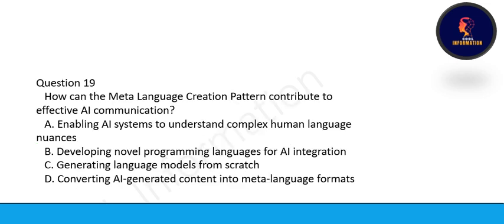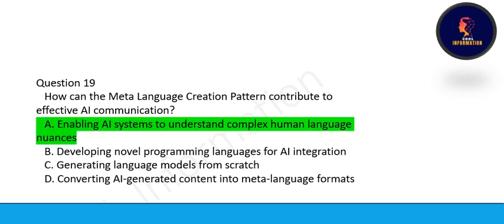Next one. How can the meta language creation pattern contribute to effective AI communication? Option A is enabling AI system to understand complex human language. And option B is developing novel programming languages for AI integration, generating language models from scratch, or converting AI generated content into meta language formats. Correct option is option A. Enabling AI system to understand complex human language.